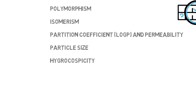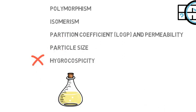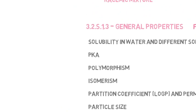For example, for a liquid API, hygroscopicity will not be relevant since this is a property that describes the capacity of solids to absorb humidity.